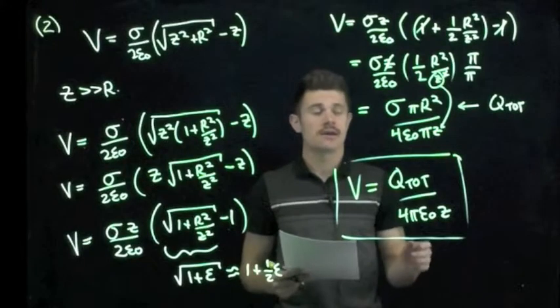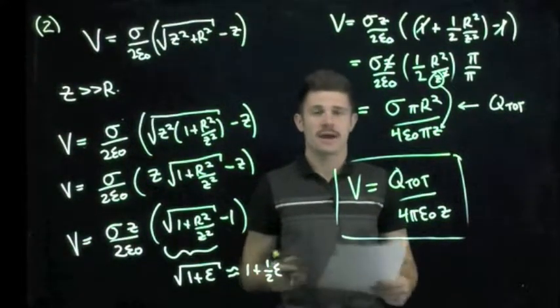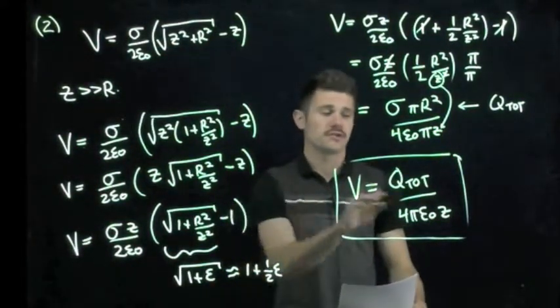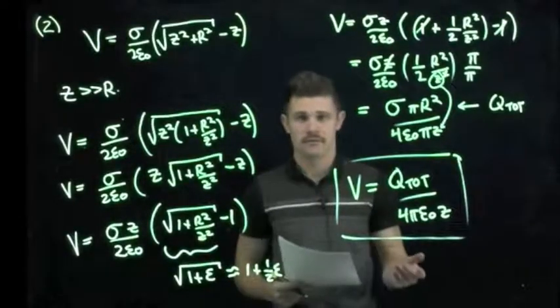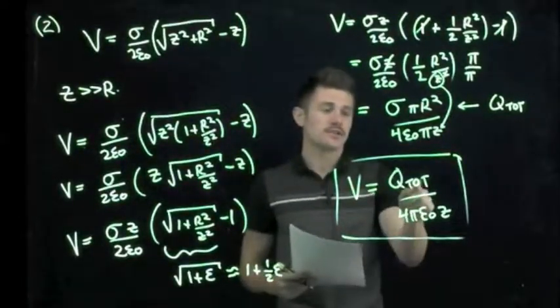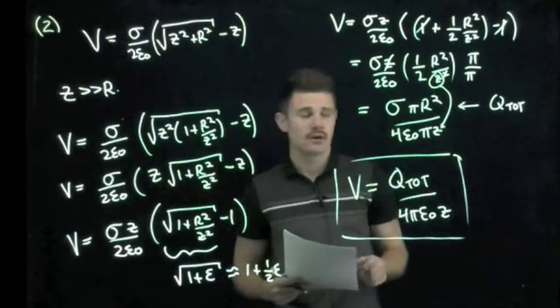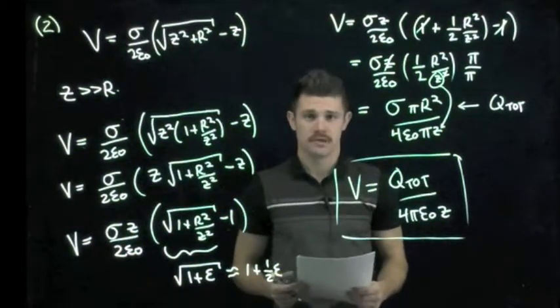So even though it's a charged disk and when we're very far away, it acts as if it's a point charge and the potential falls off as if it were a point charge. So the final potential for the charged disk for z much greater than r is just q total, which is sigma pi r squared over four pi epsilon naught times z.